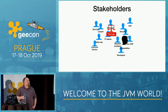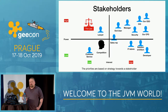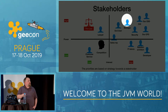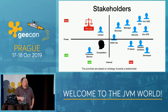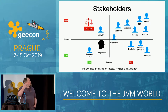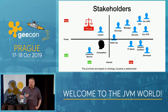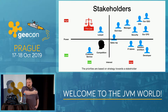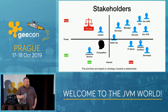For managing stakeholders, we use a power-interest matrix. The powerful and highly interested stakeholders you should manage closely. The less powerful but still interested ones you should keep informed. You should monitor those with low power and low interest — like the competition — to know what they're doing. And those with high power but low interest — like the law and lawyers — you should keep satisfied. So at least don't break the law.